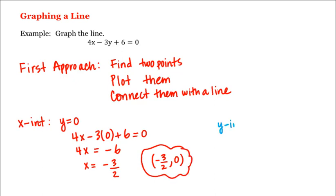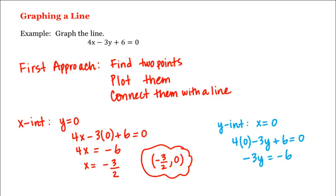And to find the y intercept, we set x equal to 0 in our equation, which gives us 4 times 0 minus 3y plus 6 is equal to 0. Or negative 3y is equal to negative 6. Or y is equal to 2, which is our y intercept. Which means this point also lies on our graph.